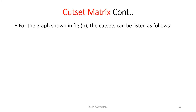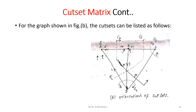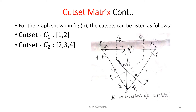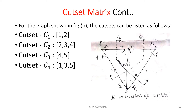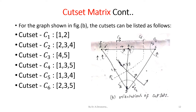For the graph shown in figure B, the cut sets can be listed as follows. The orientation of cut sets is indicated in figure B. Cut set C1 has branches 1 and 2. Cut set C2 has branches 2, 3, and 4. Cut set C3 has branches 4 and 5. Cut set C4 has branches 1, 3, and 5. Cut set C5 has branches 1, 3, and 4. Cut set C6 has branches 2, 3, and 5. This is indicated in figure B.